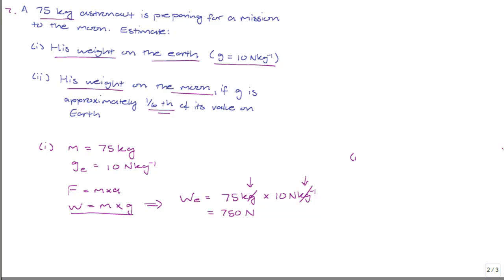On the Moon, they say that the value of g is approximately one-sixth of its value on Earth. So g on the Moon is equal to 1 over 6 times 10, which is equal to 1.67, approximately, 1.67 Newtons per kilogram. Using the same formula for his weight,